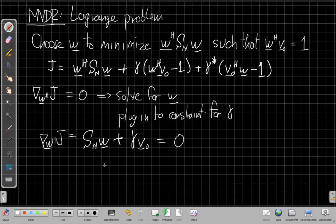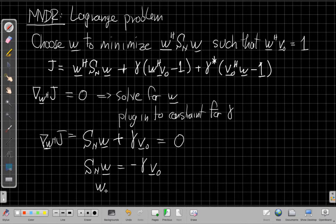And now if I want to solve this for W, I'm going to move this, the constraint term, to the right-hand side. So I have S sub N, the matrix, times W, is minus gamma, which is a scalar, times V naught. And I'm going to multiply both sides by S sub N inverse. So I multiply by the inverse of the spatial covariance matrix of the noise.